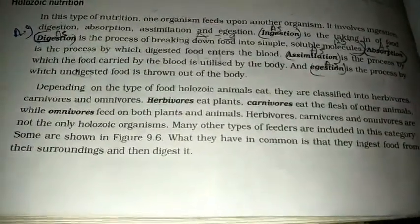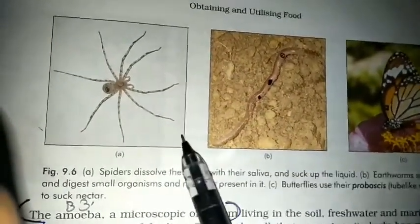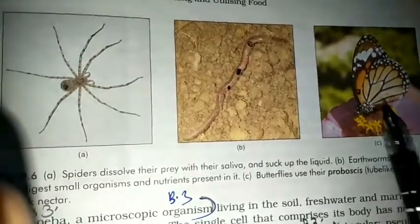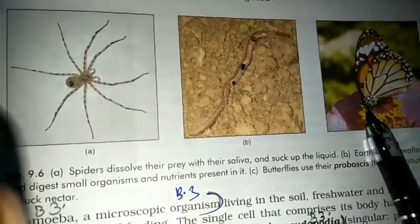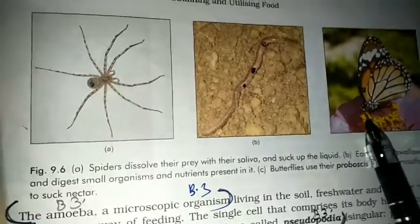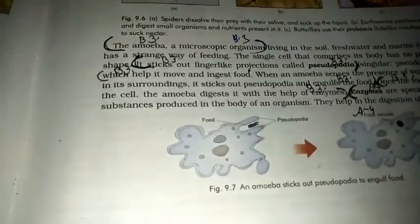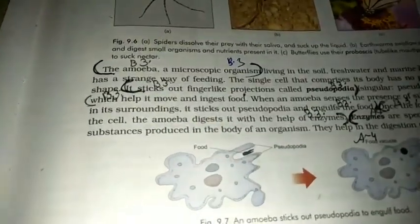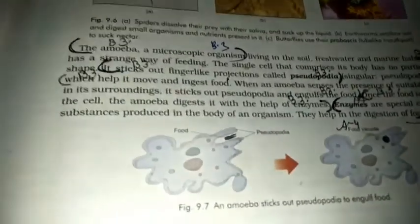Herbivores, carnivores, and omnivores are not the only holozoic organisms — many other types of feeders are included in this category. For example: spiders, earthworms which live inside the soil, and butterflies which use a special structure called the proboscis to suck nectar from flowers. Amoeba also has holozoic nutrition — it is a microscopic organism that lives in soil, fresh water, and marine habitats.